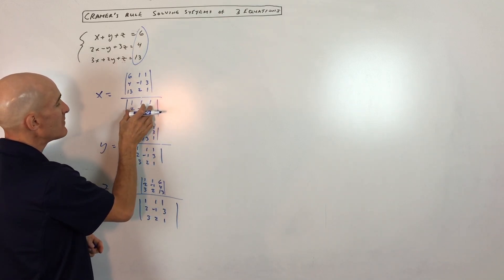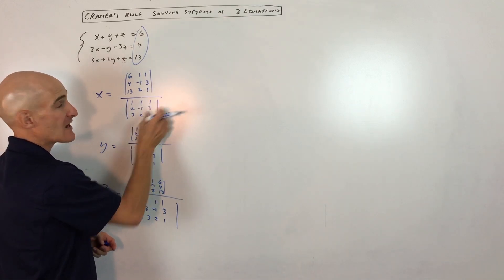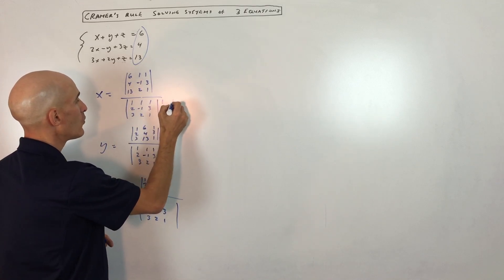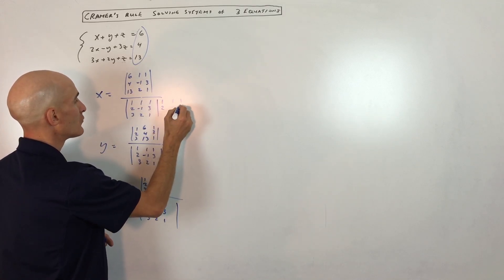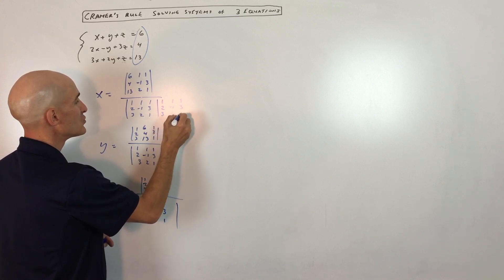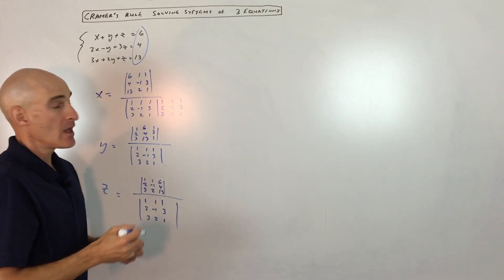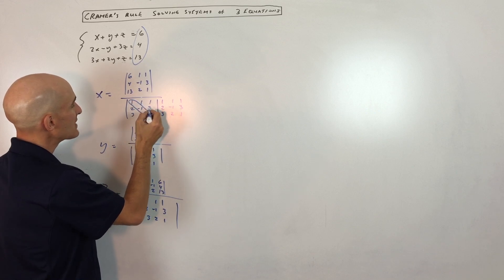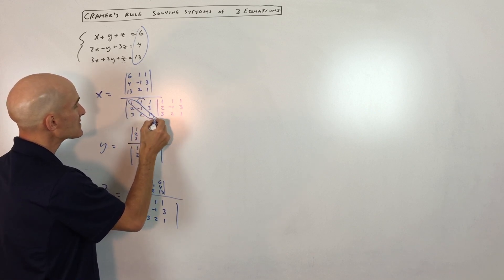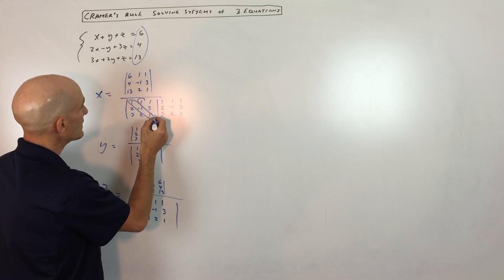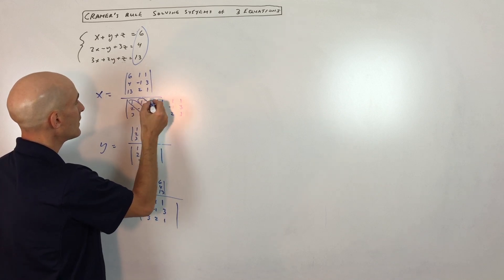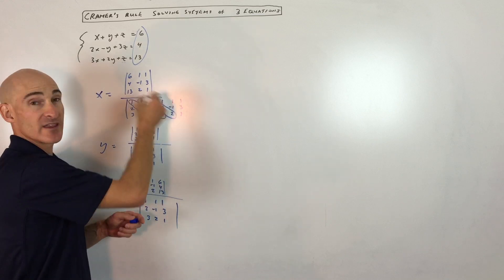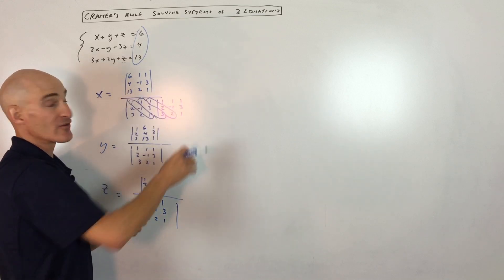To find the determinant of a 3x3 matrix, here's an easy way: take the matrix and write it right next to the original matrix. So copying down: 1, 1, 1 / 2, negative 1, 3 / 3, 2, 1. Now we're going to multiply on the diagonal — these guys multiply together, plus these guys, plus these guys — going from the top-left corner diagonally down to the right.